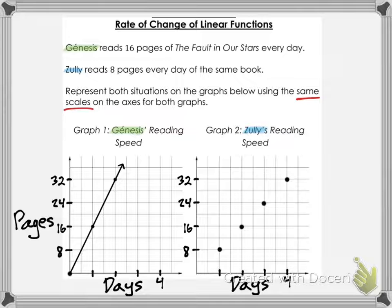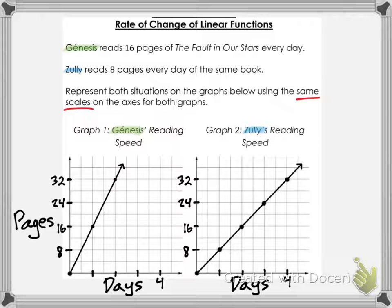Now we get Zooli — basically the same idea. After 0 days, 0 pages would have been read. After 1 day, 8 pages would have been read, so the first dot is at (1, 8). When 2 days have passed, 16 pages have been read; 3 days, 24 pages. You just keep increasing by 8. As you can see, we now have a line that isn't as steep as Genesis' line — it makes sense, because Genesis was reading more pages every day, so her line has a steeper slope, a steeper rate of change.